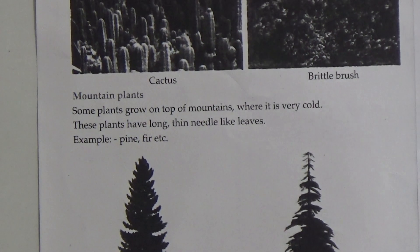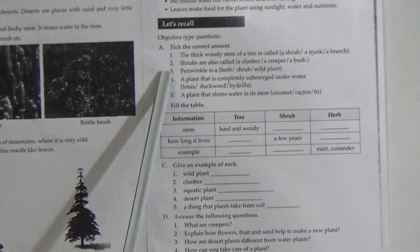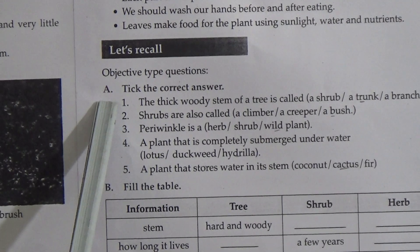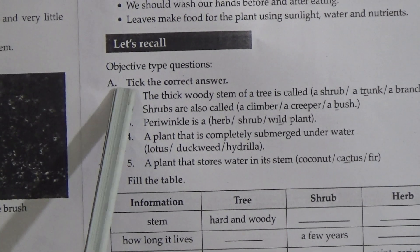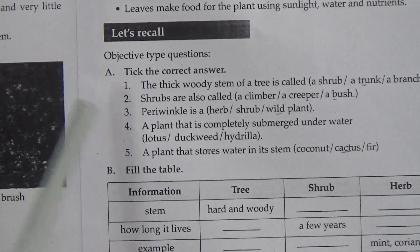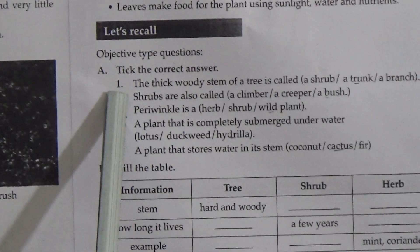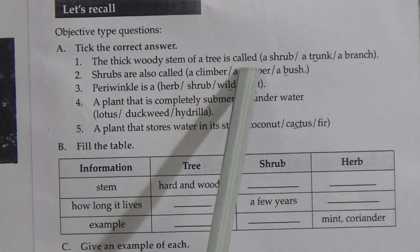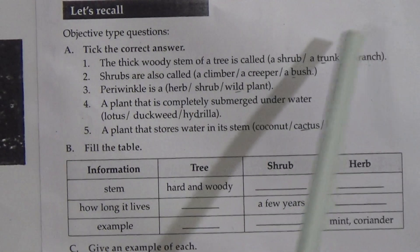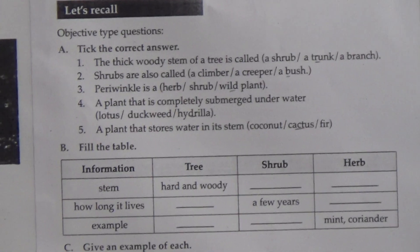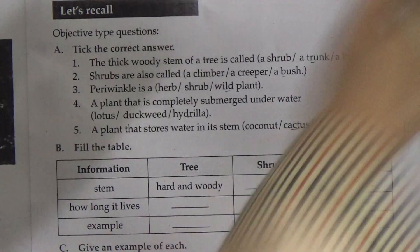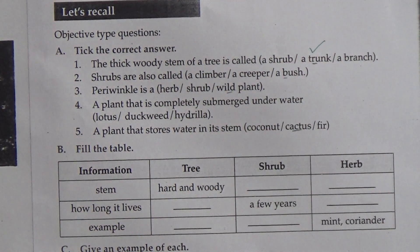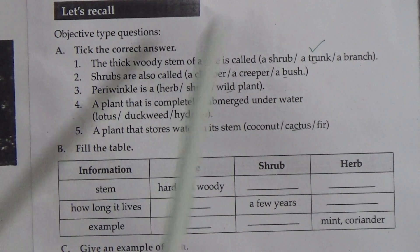Now students, we will do some exercise from this chapter today. We will solve exercise A — tick the correct answer. Question one: the thick woody stem of a tree is called — a shrub, a trunk, or a branch? The correct answer is trunk, so we put a tick there. Question two: shrubs are also called — a climber, a creeper, or a bush? The correct answer is bush.